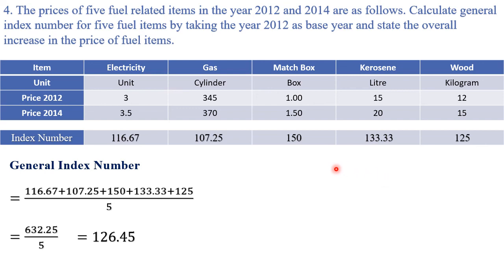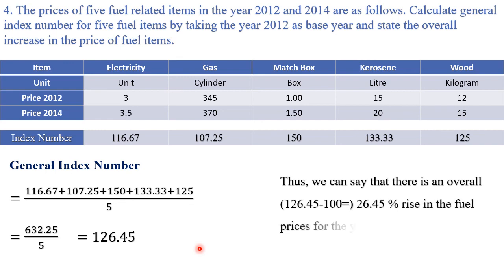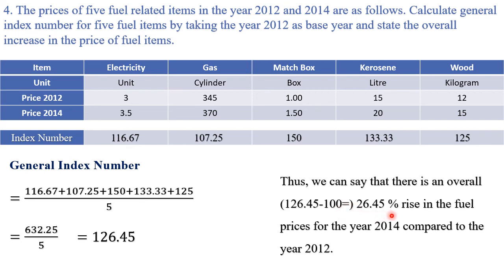The general index number is 126.45. We also need to state the overall increase in fuel prices. Since the base year index is always taken as 100, the difference is 126.45 minus 100, which equals 26.45. So we write: there is an overall 26.45% rise in the fuel prices for the year 2014 compared to the year 2012. Writing such a statement is very important for your exams. This is how you solve a general index number question and write a conclusion statement.